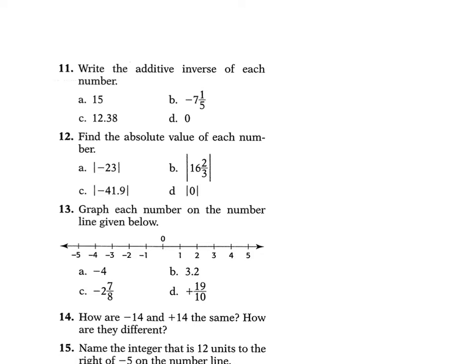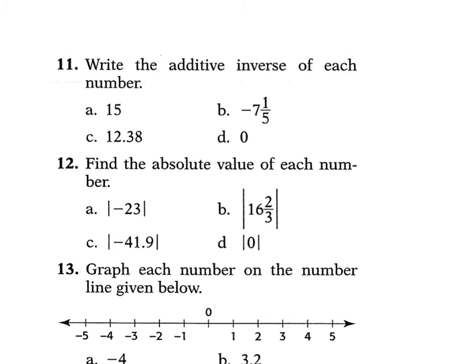For 11a, we are writing the additive inverse of each number — so the opposite of the number. The opposite of 15 is negative 15. The opposite of negative 7 and 1/5 is positive 7 and 1/5. The opposite of 12.38 is negative 12.38. And then the opposite of 0 is just 0 — 0 doesn't have an opposite; it's neither positive nor negative.